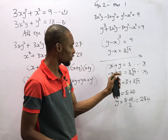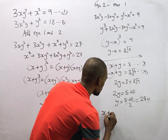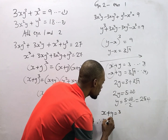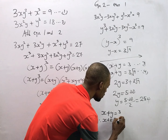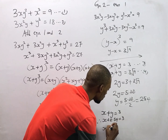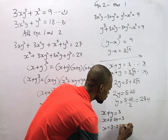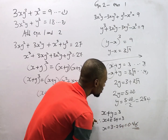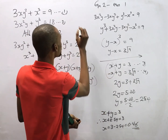Substituting into equation 3, we have s + y = 3. Therefore s + 2.54 = 3, so s = 3 − 2.54, which equals 0.46. That's how we solve this simultaneous equation.